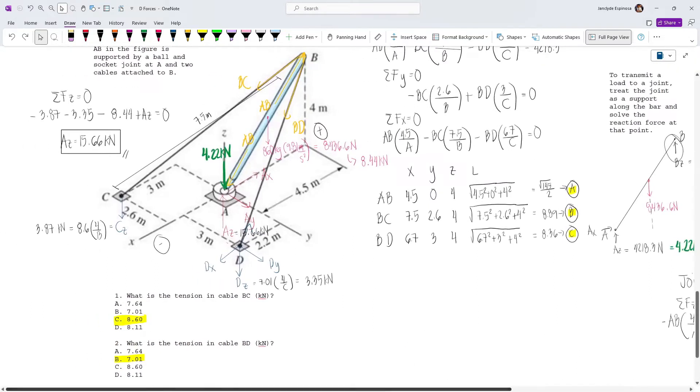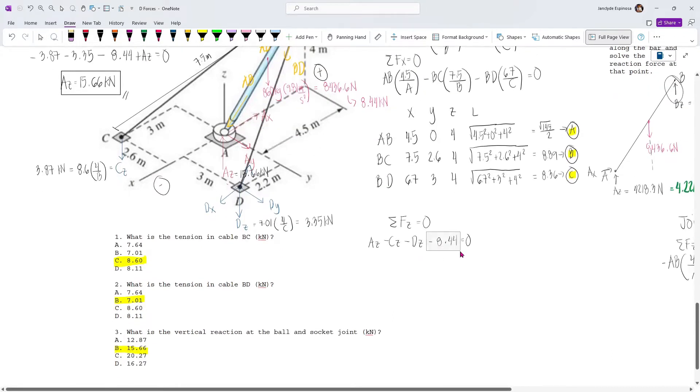By method of moments, let's look at our system externally. First, we're gonna sum up forces along the Z axis. So we have minus CZ minus DZ and then plus AZ. Let's order that, and we have minus 8.44 KN. Let's convert everything into KN so our results will also be in KN. So minus 8.44, this would be equal to 0. Let's just remove this one because this was for the transmission of loads. We're gonna move this to the right side. This becomes positive. So we have this as our first equation.